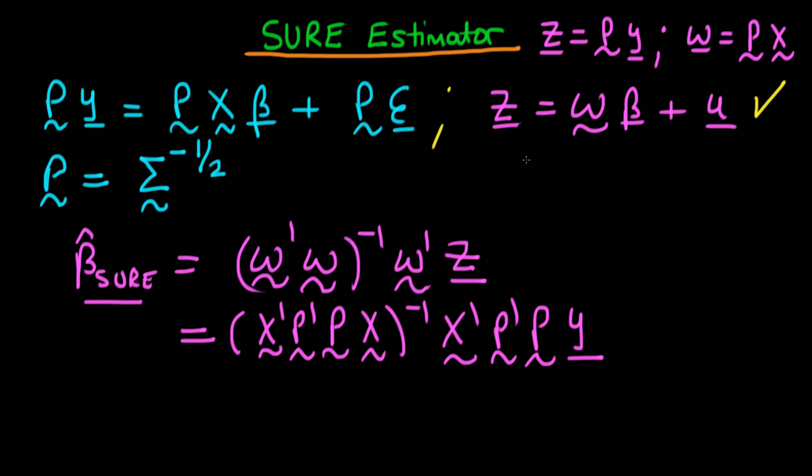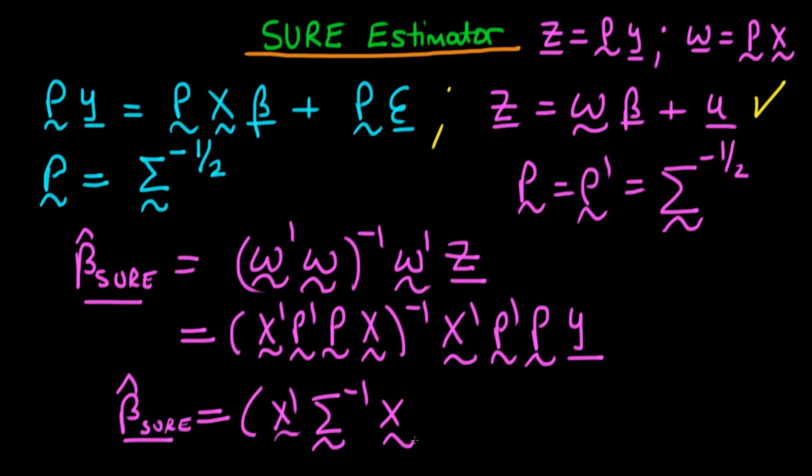And we know that P is equal to P prime, and it's equal to capital sigma to the power minus a half. So when I multiply P by P prime, I just get sigma to the power minus one. So what we get in the end is that our beta hat Schur, our vector of estimated parameter values, is equal to X prime capital sigma to the power minus one times X, all to the power minus one times X prime capital sigma inverted times Y. So that's the form of the Schur estimator.